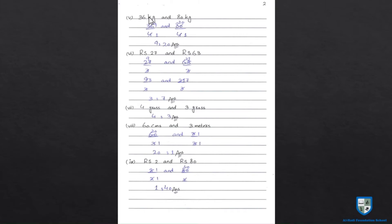Part 5: 36 kg and 80 kg. 4 एक ऐसा number है जो दोनों को divide करता है — 9's are 36 and 4 to 20 times multiply करें तो 80 आता है. 9 is to 20 — कोई भी ऐसा number नहीं है जो 9 और 20 को एक साथ divide करे — so 9 to 20 is the most simplest form of 36 and 80 kg.